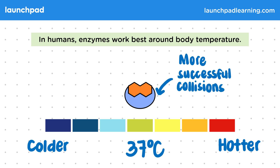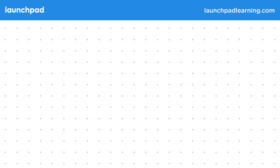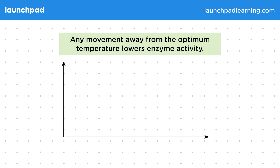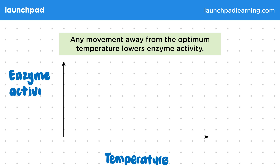But what happens if we move away from the optimum temperature? Any movement away from the optimum temperature lowers enzyme activity. So let's look at this on a graph. We're going to plot temperature on the x-axis and enzyme activity, or the rate of reaction, on the y-axis.